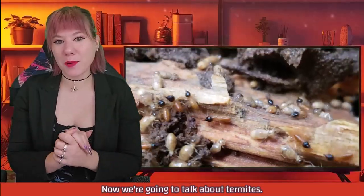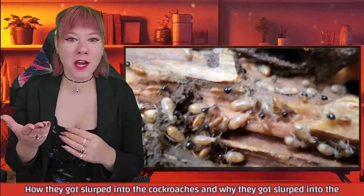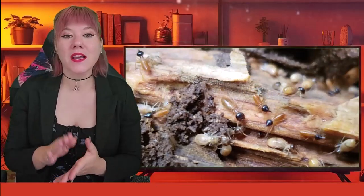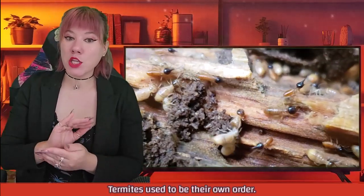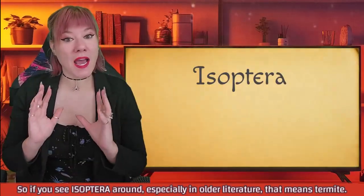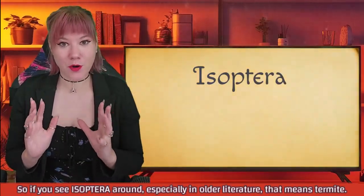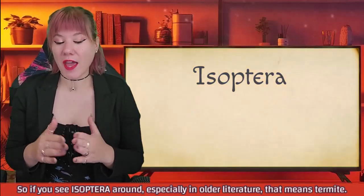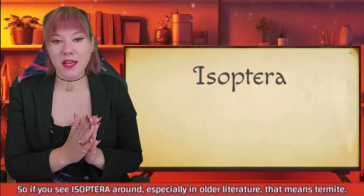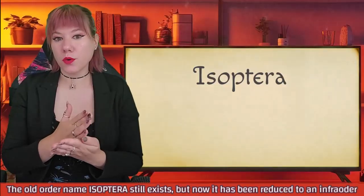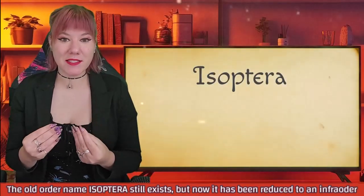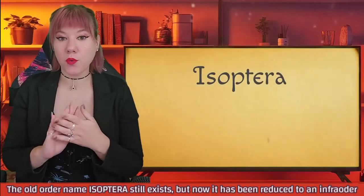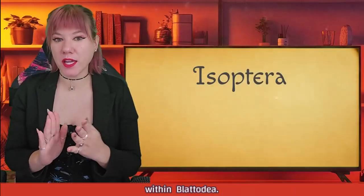Now we're going to talk about termites, how they got slurped into the cockroaches, and why they got slurped into the cockroaches. Termites used to be their own order. So if you see Isoptera around, especially in older literature, that means termites. The old order name Isoptera still exists, but now it has been reduced to an infraorder within Blattodea.